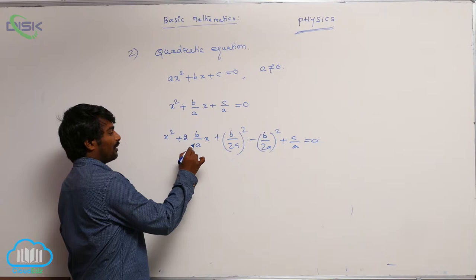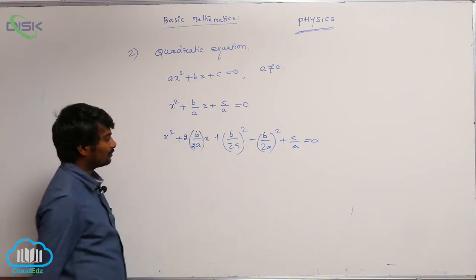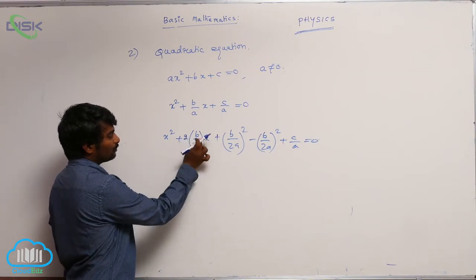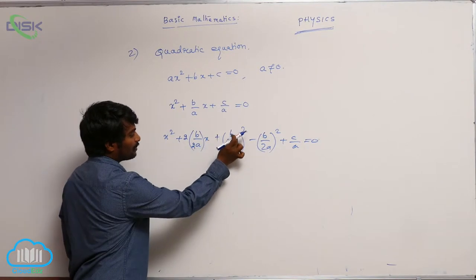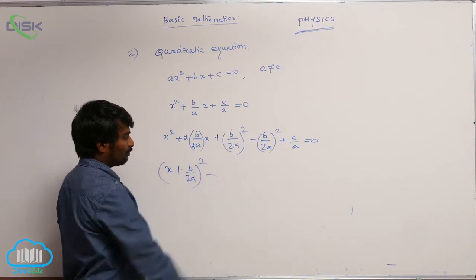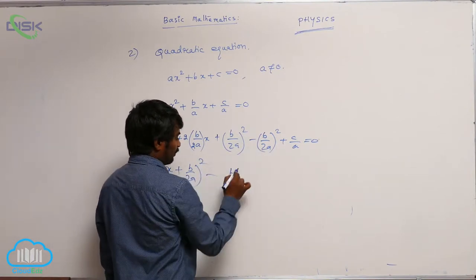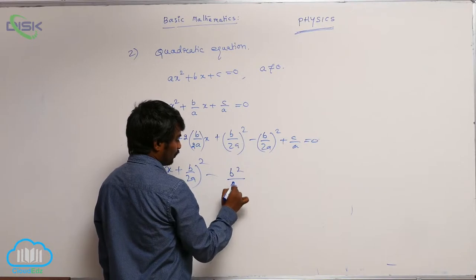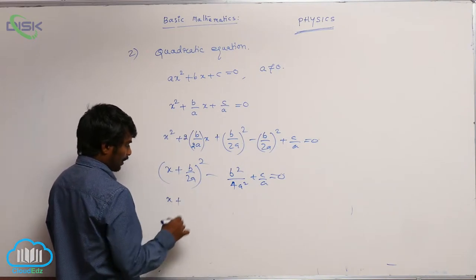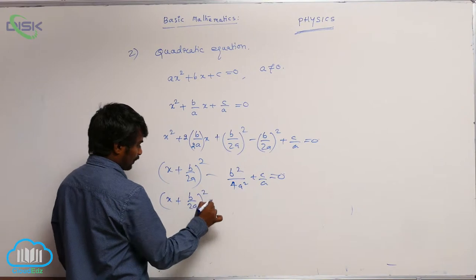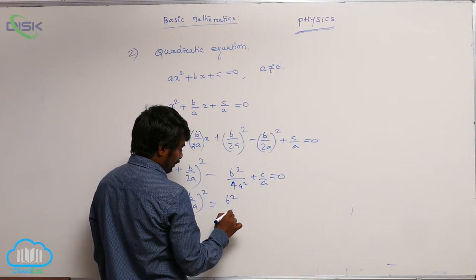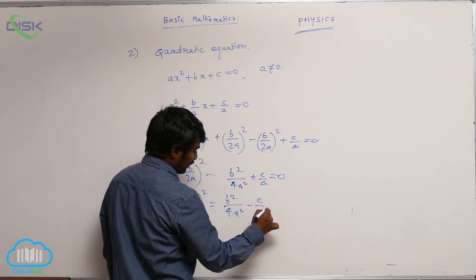Multiplying and dividing by 2, I can write x squared plus 2 times B by 2A times x plus B by 2A whole square, which equals x plus B by 2A whole square, minus B squared by 4A squared minus C by A equals 0. So x plus B by 2A whole square equals B squared by 4A squared minus C by A.